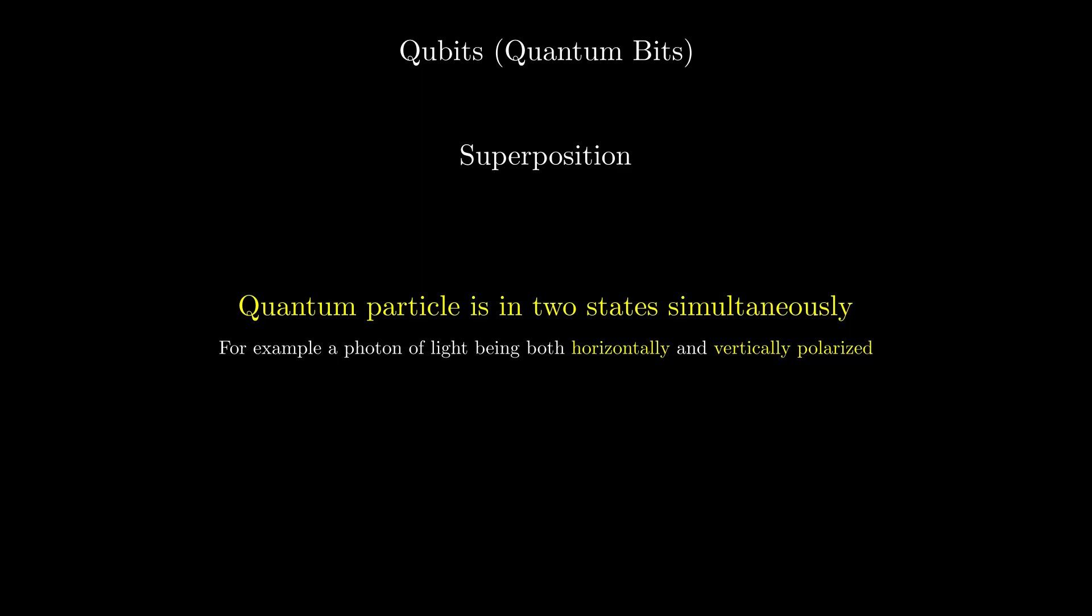In terms of quantum computing, we say a qubit is in superposition if it is both zero and one at the same time. Let's look at how we represent qubits mathematically.